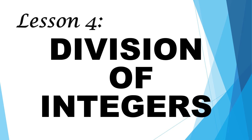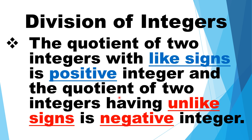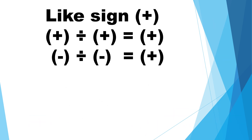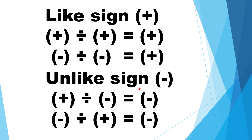Lesson 4: Division of integers. The quotient of two integers with like signs is a positive integer, and the quotient of two integers having unlike signs is a negative integer. If like signs, the sign of the quotient is positive: positive divided by positive equals positive; negative divided by negative equals positive. If unlike signs, the sign of the quotient is negative: positive divided by negative equals negative; negative divided by positive equals negative.